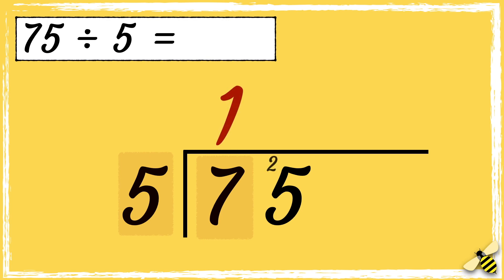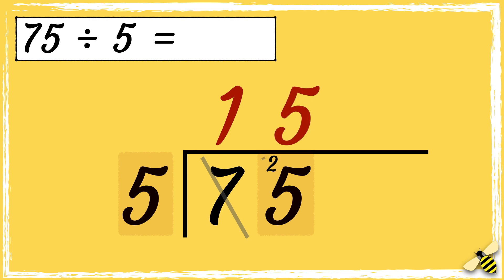I can cross out the seven now to keep track of what I've done. Notice how the last digit has now become the number 25 instead of five. So now we can work out how many fives go into 25. Five goes into 25 five times, so the answer is 15.